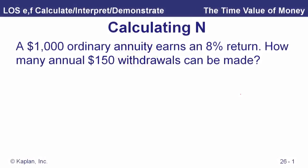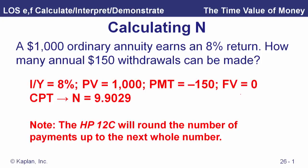Let's look at one more example calculating N. A $1,000 ordinary annuity earns an 8% return — how many annual $150 withdrawals can be made? Our present value is $1,000 deposited today. The payments are negative $150, the interest rate is 8%, and the future value is zero — once we get that last $150 payment, that's it, no more. We calculate N and get 9.9029, so just about ten periods.